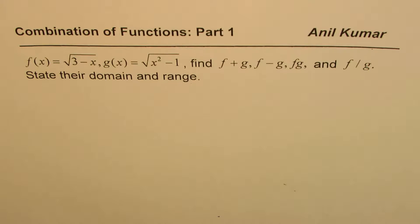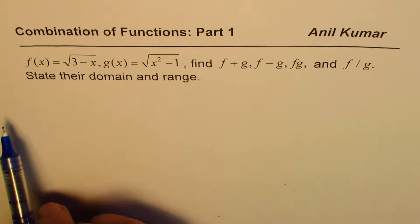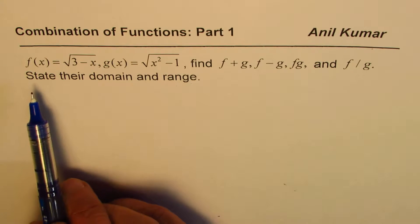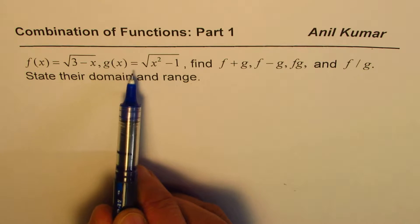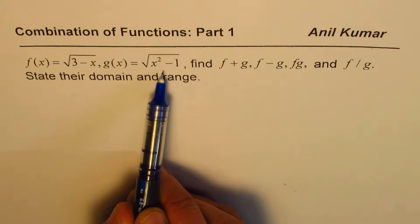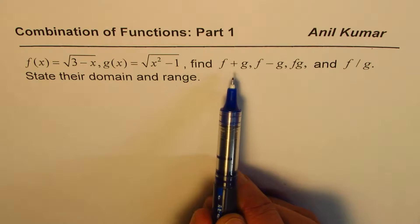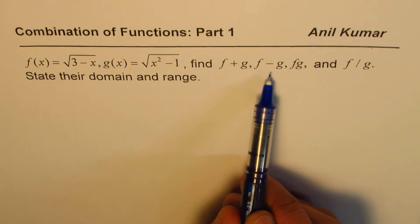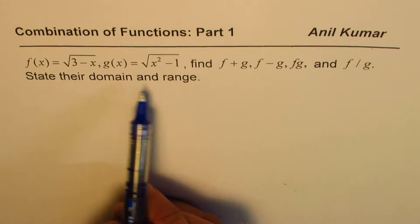I'm Anil Kumar. Let me first thank my subscriber for sharing an excellent question. She wants to understand the unit on combination of functions. The question is: f of x equals square root of 3 minus x, g of x equals square root of x squared minus 1. We need to find their sum, difference, product, and quotient, and state their domain and range.